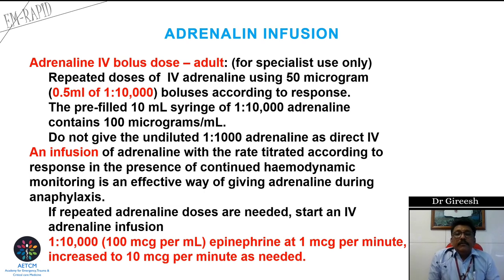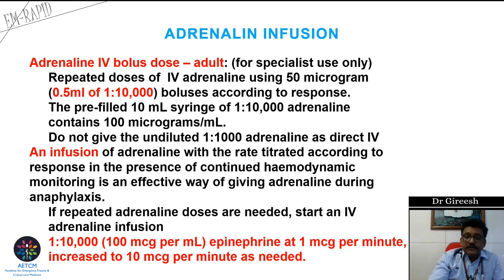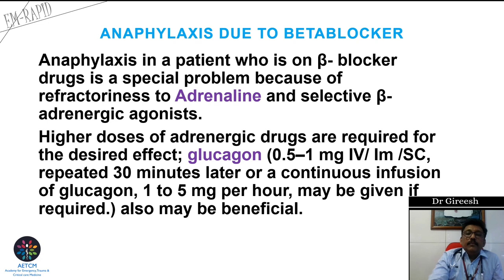Adrenaline infusion can be given by a specialist in the ER as a continuous infusion if the patient does not improve with initial IM or subcutaneous dosing. The protocol is 1 microgram per minute increased to 10 micrograms per minute as needed using a 1 in 10,000 solution. For anaphylaxis induced by beta-blockers, glucagon is the treatment of choice at 0.5 to 1 mg IV, IM, or subcutaneous.